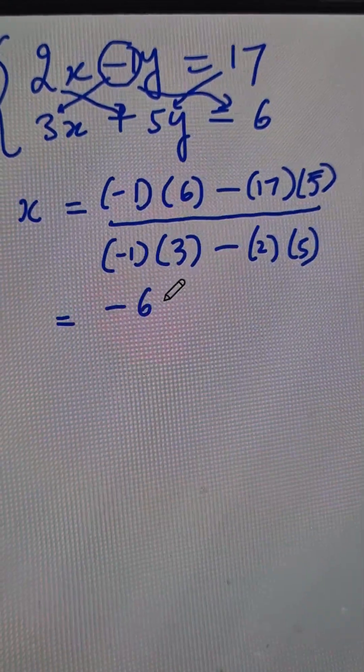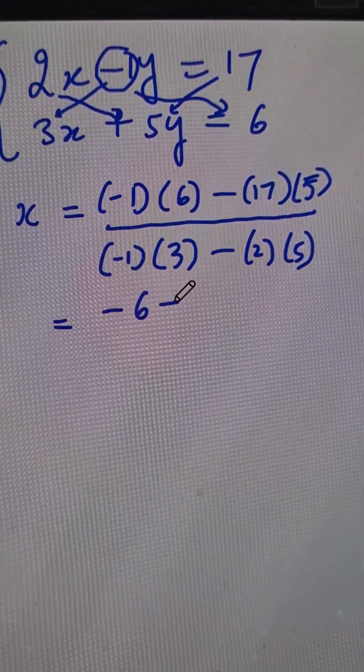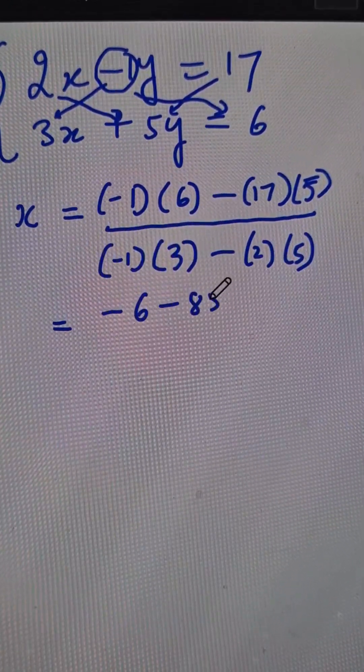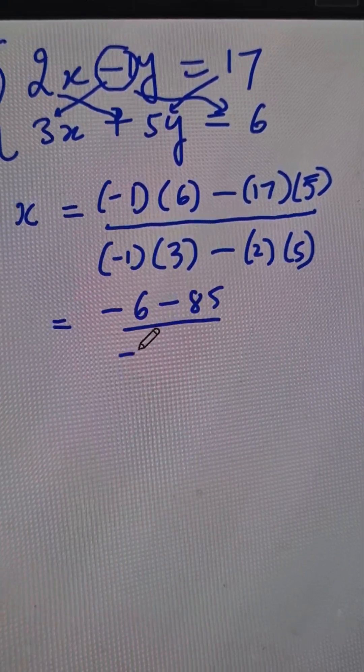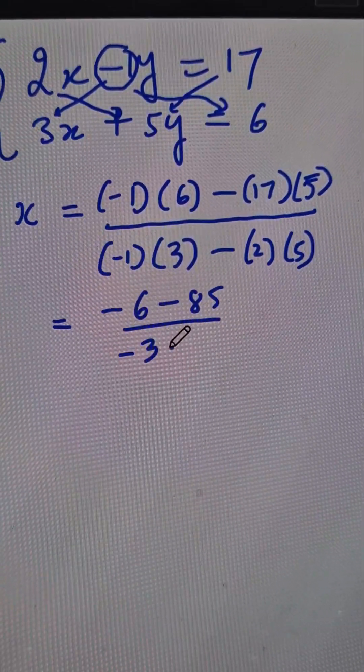This is negative 6 and negative 17 fives are 85, and then in the denominator we have the negative 3 and negative 10.